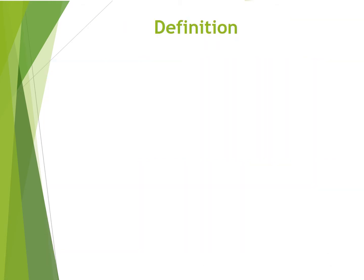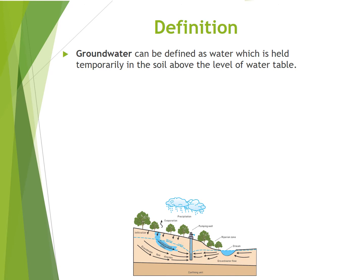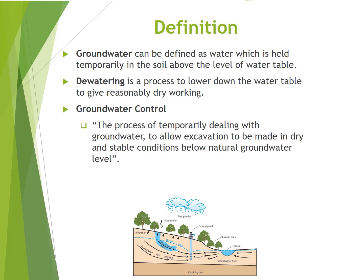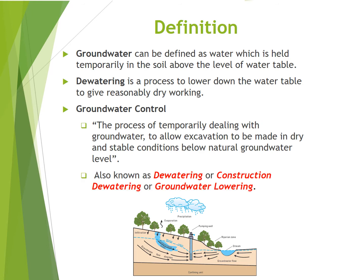Definition of groundwater and dewatering: Groundwater can be defined as water which is held temporarily in the soil above the level of the water table. Dewatering is a process to lower the water table to give reasonably dry working conditions. Groundwater control is the process of temporarily dealing with groundwater to allow excavation to be made in dry and stable conditions below the natural groundwater level, also known as dewatering, construction dewatering, or groundwater lowering.